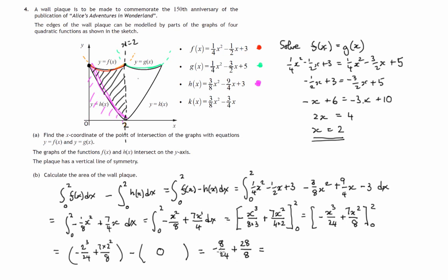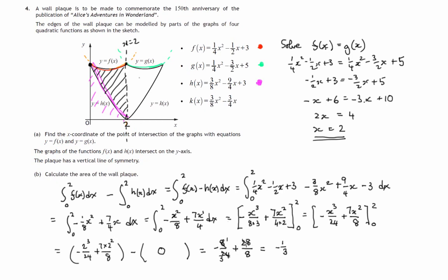Now that first fraction, 8 into 8 is 1, 8 into 24 is 3, so we've got minus a third. And then there's a bit of cancelling, 4 into 28, 4 7s are 28, and 4 into 8 is 2, so it's 7 over 2. So we'll change both of these into sixths. That's 2 sixths, negative 2 sixths, plus 21 over 6. And 2 from 21 is 19, so it's 19 over 6 for the area between these two curves.